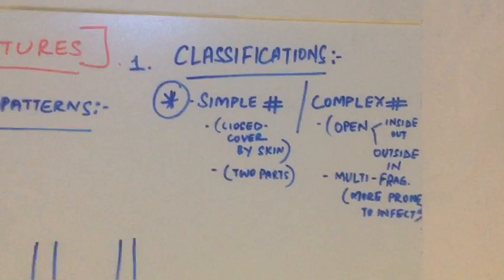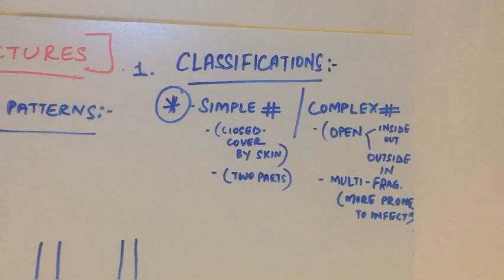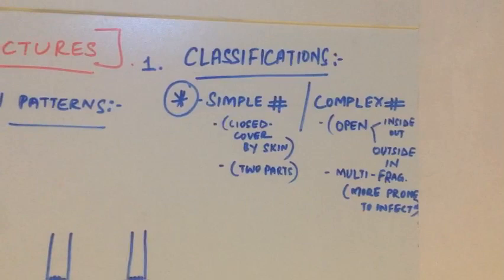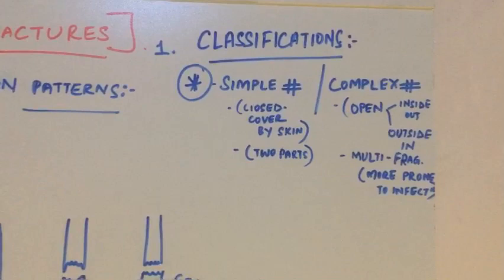The complex or open fracture can be a multi-fragment fracture and it has very poor skin cover, or maybe sometimes very less skin cover, or a compromised state of soft tissues. The open fracture can be further classified into two types: inside-out or outside-in.